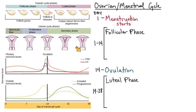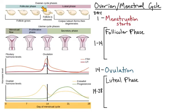The pituitary hormones we'll look at are FSH — follicle stimulating hormone — and LH, luteinizing hormone. FSH tells the follicle to grow, and LH tells the ovary to release the egg, creating the leftover structure called the corpus luteum. The ovarian hormones are estrogen — specifically estradiol — and progesterone, which is how the ovary communicates back to the pituitary and the uterus.